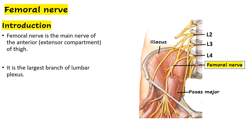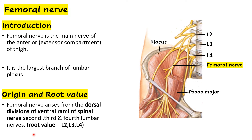The lumbar plexus is formed by the ventral rami of L1, L2, L3, and L4. All plexuses in our body — whether cervical, brachial, lumbar, or lumbosacral — are formed by ventral rami of the spinal nerves. The femoral nerve arises from the dorsal divisions of the ventral rami of spinal nerves L2, L3, and L4. So the root value is L2, L3, and L4.